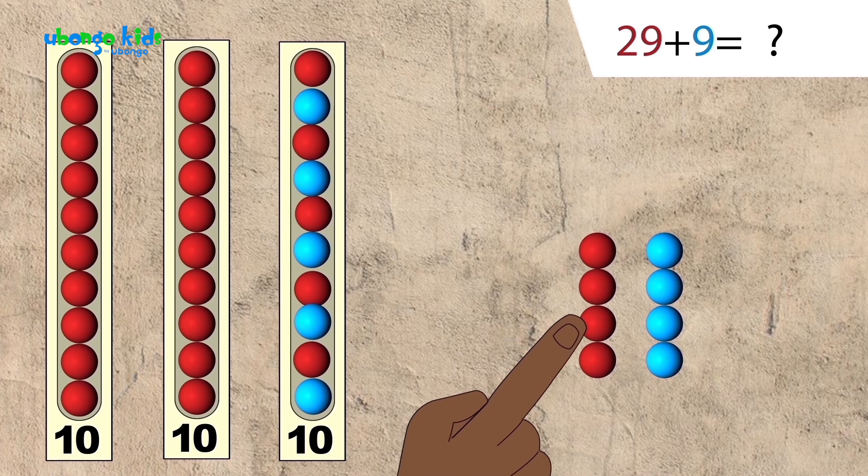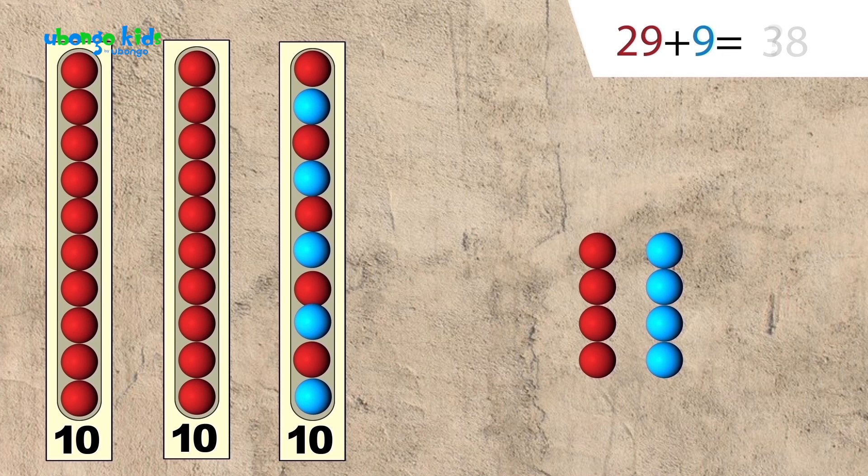One, two, three, four, five, six, seven, eight. It's thirty-eight.